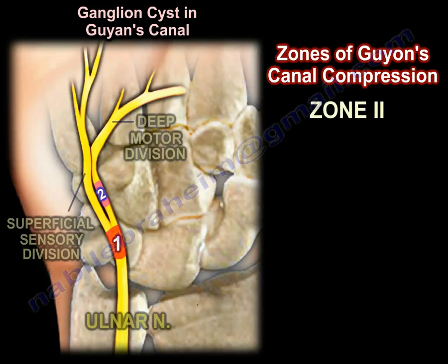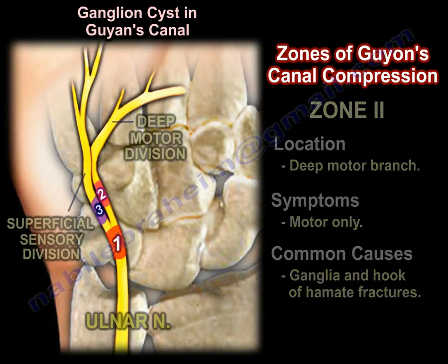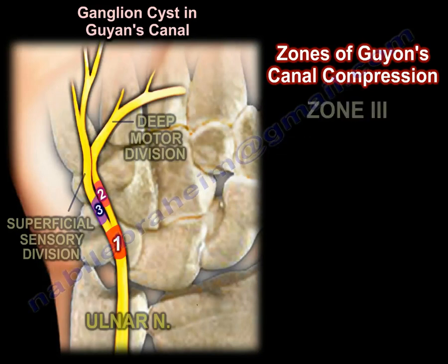Zone 2 is located at the deep motor branch. The symptoms are motor only, and the causes for compression include a ganglion and hook of hamate fractures.